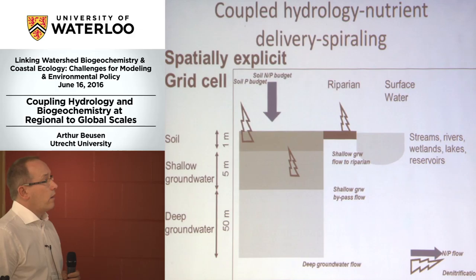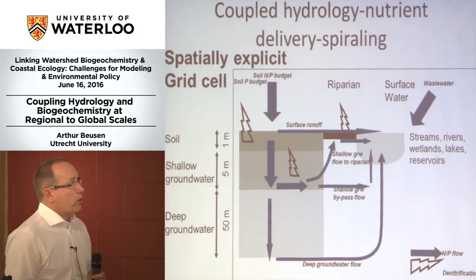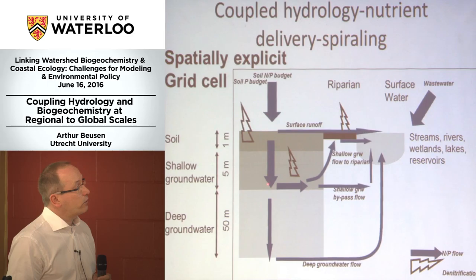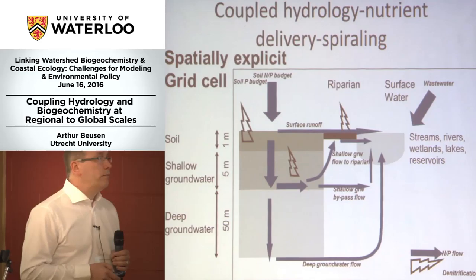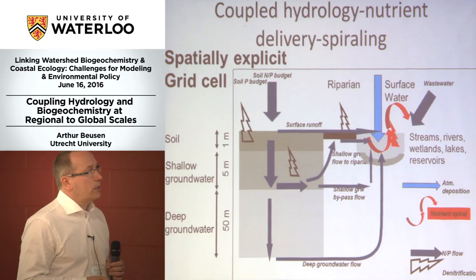Looking at this whole system: for each grid cell we have this kind of conceptual model defined. We start with the nutrient and phosphorus budget. There are all kinds of fluxes: denitrification in the first meter of soil, surface runoff — not for phosphorus but for nitrogen — going down to shallow groundwater, through the riparian zone or not, and then to deep groundwater. We have two groundwater compartments, a soil compartment, and a kind of unsaturated zone. There's also atmospheric deposition and direct sources on rivers. Then we have a nutrient spiraling concept as an in-stream retention mechanism.